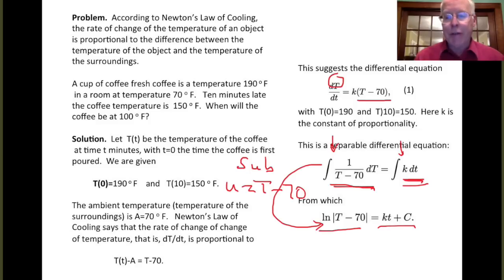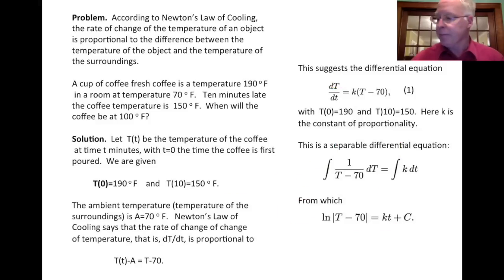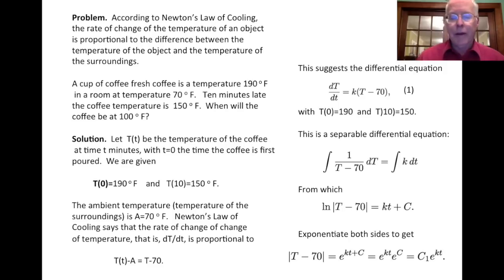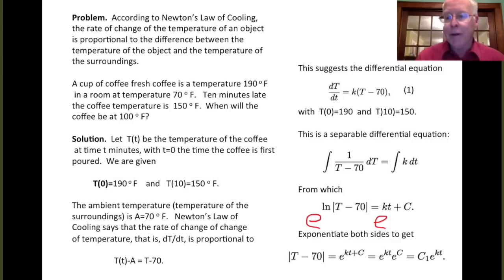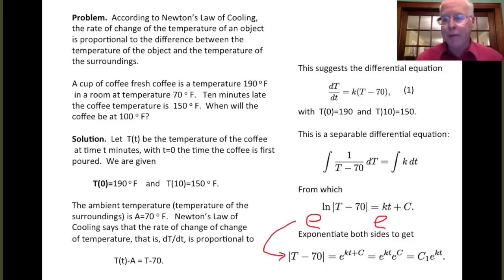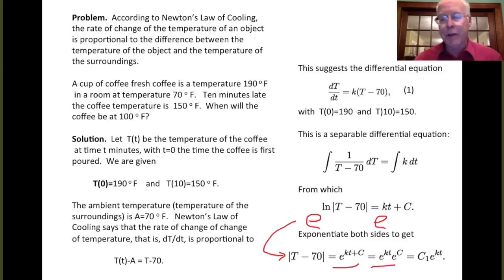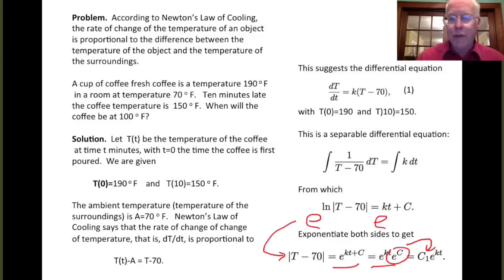We can isolate capital T by exponentiating both sides. We have e to the log|T minus 70| equals e to the (kt + C). The exponential and log being inverses gives us |T minus 70| on the left. On the right, e to the (kt + C) can be written as e to the kt times e to the C, and we call e to the C simply C1. So the exponentiation turns the additive constant into a multiplicative constant.